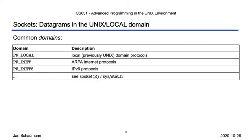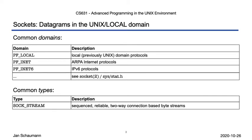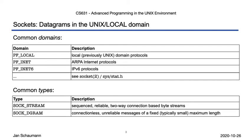Just like there are multiple domains, so are there multiple types. There are sockets of type stream, which provide sequenced, reliable, two-way connection-based byte streams — for network communications, the prime example here would be TCP. Second, there are datagram sockets, which support bidirectional, connectionless, unreliable messages — for network communications, the obvious example here would be UDP.